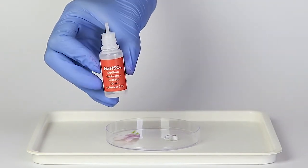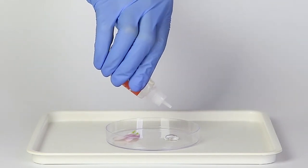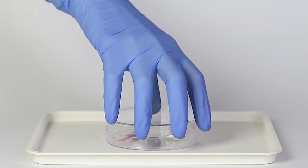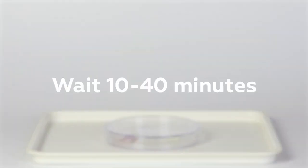Then add 5 drops of sodium hydrogen sulfate to the drops of sodium pyrosulfite. Cover the petri dish and wait for 10 to 40 minutes.